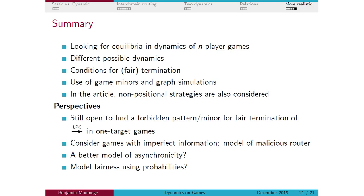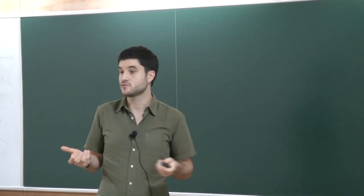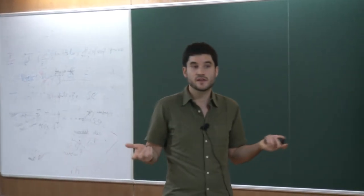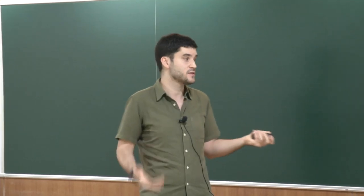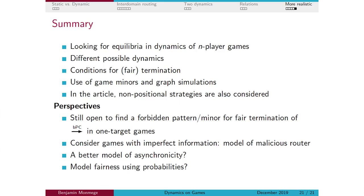The open problem is finding a necessary and sufficient matching condition — based on a forbidden minor — to prove fair termination of the best-reply concurrent dynamics. From a game theory perspective, one interesting direction is modeling a malicious router that can cheat a little, which could be modeled with games with imperfect information. We modeled asynchronicity with concurrence in the dynamics, but that is not fully realistic, so we might consider other models. For fairness, we used the same notion as for LTL, but probabilistic fairness — converging with probability one — could be another perspective.